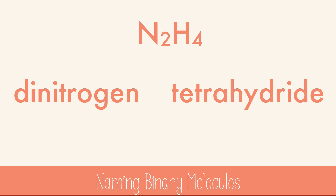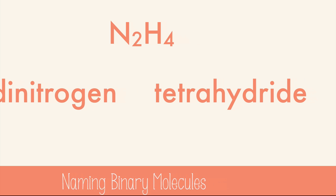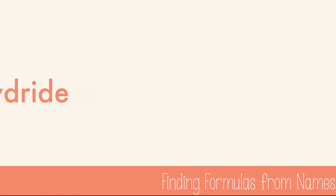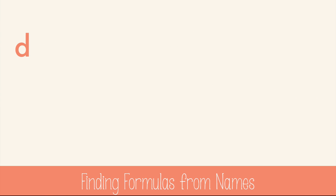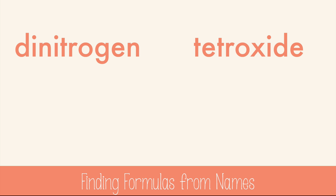You can also figure out the formula based on the name. Let's start with something sort of familiar: dinitrogen tetroxide. Di means two and tetra means four, so we have N2O4.